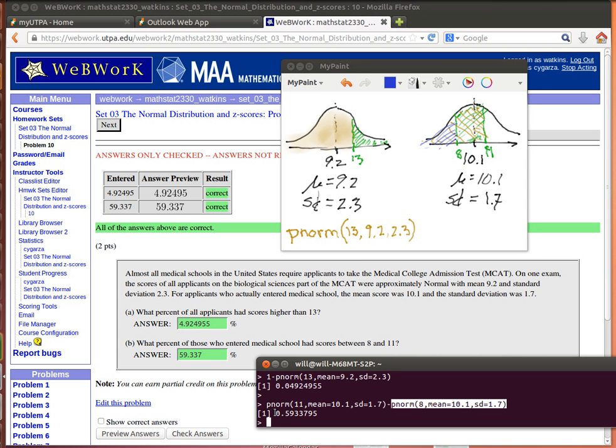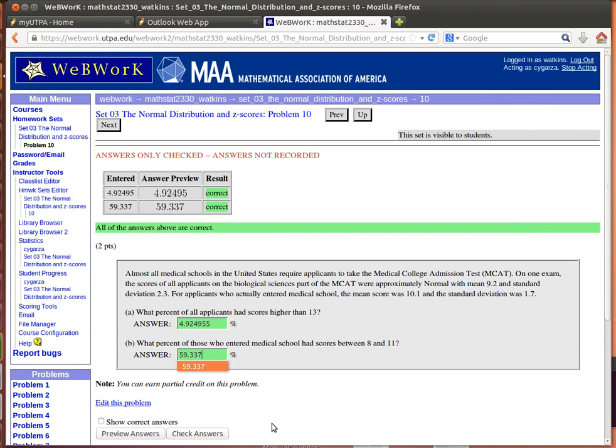That gives us a fraction, which we have to change to a percent. The fraction is 0.5933795, and we just move the decimal place over two places, and there it is, and there's the correct answer.